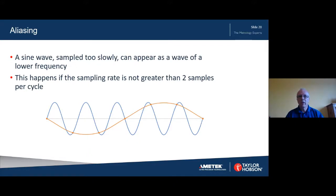This is what we can see in this graphic, which shows a sine wave in blue that is fast and has been sampled more slowly than required. You can see the data points that are sampled, and when we draw a sine wave through those points we get the orange sine wave, which is at a much lower frequency. This is aliasing.